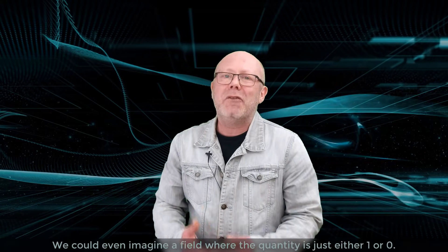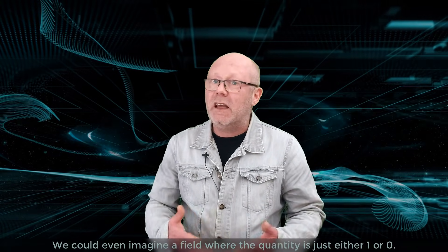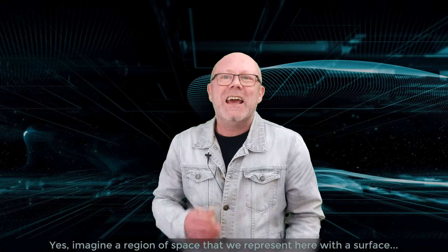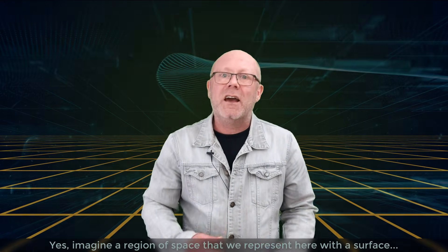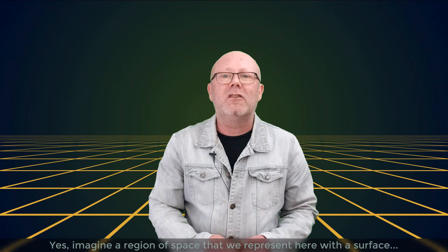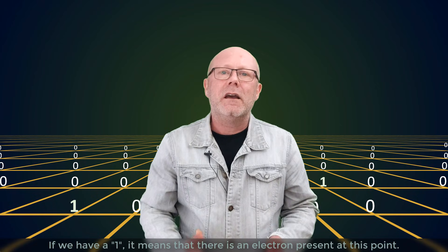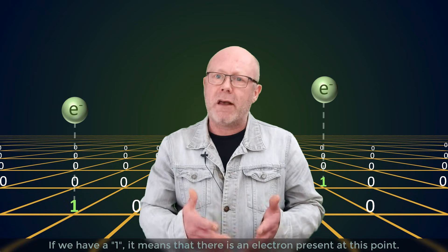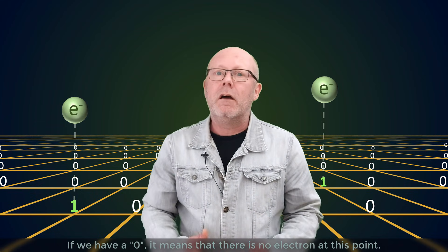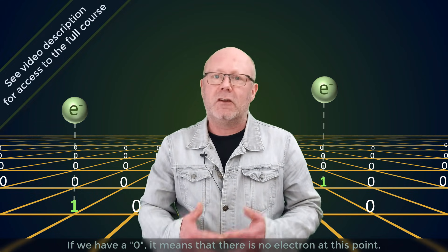We could even imagine a field where the quantity is just either 1 or 0. For example, an electron field. Imagine a region of space that we represent here with a surface, for which every point is assigned either a 1 or a 0. If we have a 1, it means that there is an electron present at this point. If we have a 0, that means there is no electron at this point.